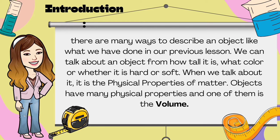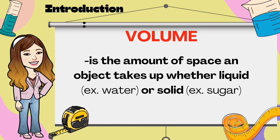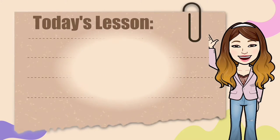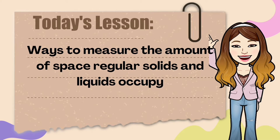There are many ways to describe an object like what we have done in our previous lesson. We can talk about an object from how tall it is, what color, or whether it is hard or soft. When we talk about it, it is the physical properties of matter. Objects have many physical properties, and one of them is the volume. What is volume? A volume is the amount of space an object takes up, whether liquid like water or solid like sugar.